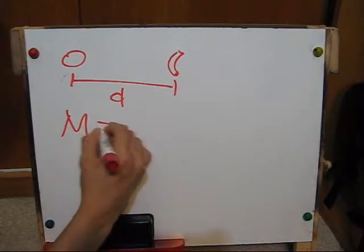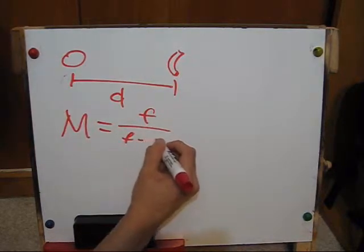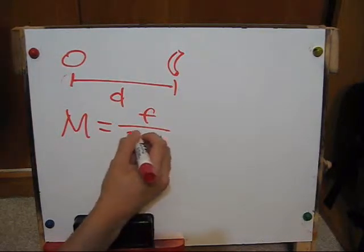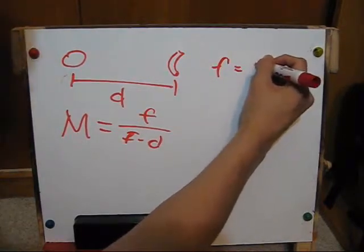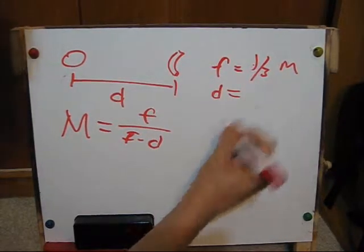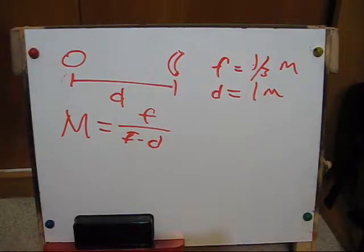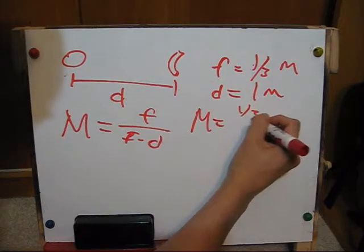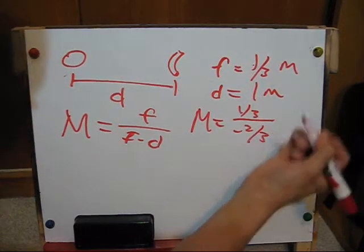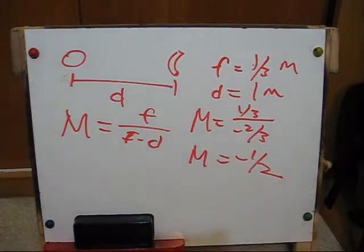To calculate magnification of an object, you take the focal length divided by the focal length minus the distance from the lens to the object. So say the focal length is one-third of a meter and the distance from the lens to the object is one meter. Then the magnification equals one-third over minus two-thirds, which is minus one-half.